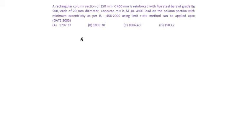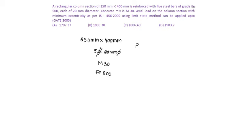Given a rectangular column 250 mm by 400 mm reinforced with 5 bars of 20 mm diameter, M30 concrete and Fe500 steel are used. The axial load capacity of the column is given by: 0.4 × fck × Ac + 0.67 × fy × Asc.